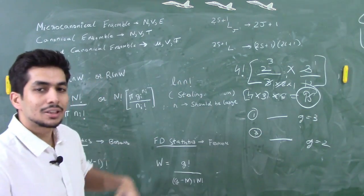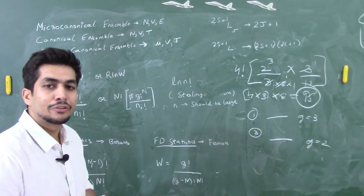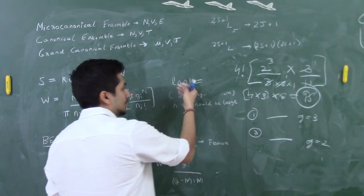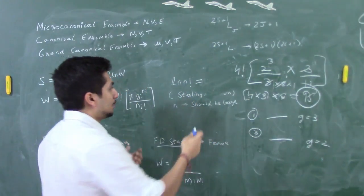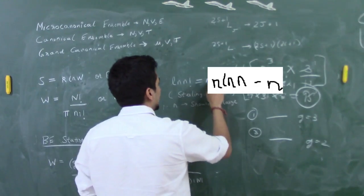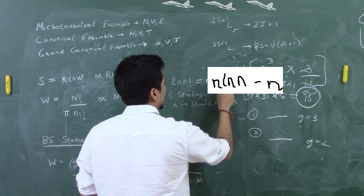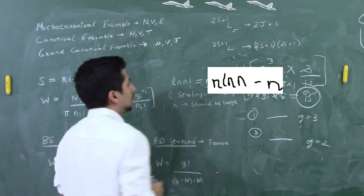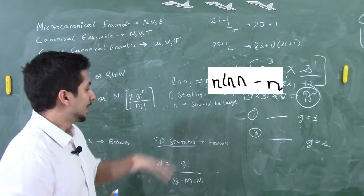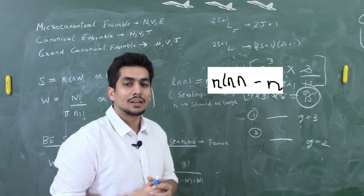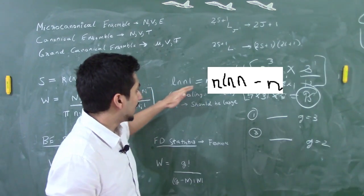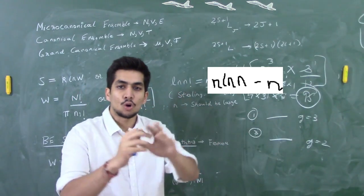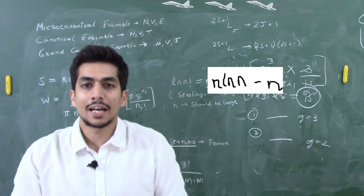The Stirling approximation states that ln(N!) ≈ N·ln(N) − N, applicable when N is very large. This is Stirling's theorem, useful in derivations of statistical mechanics.